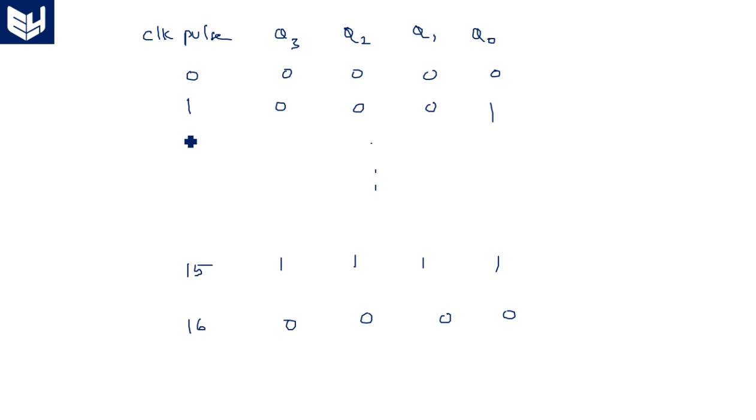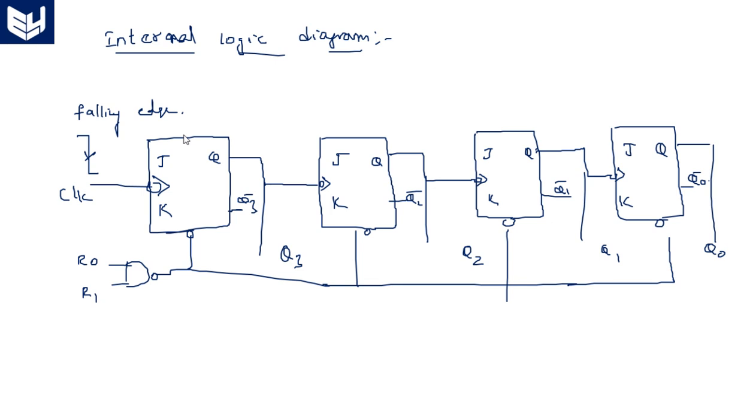Whenever the 16th clock pulse occurs, the counter will get reset and this is the logic diagram for that. Now our task is VHDL code for 4-bit down counter or up counter.